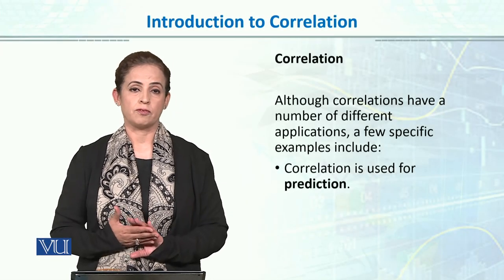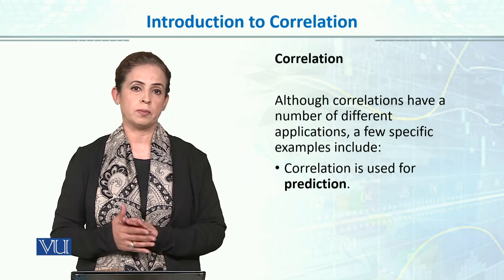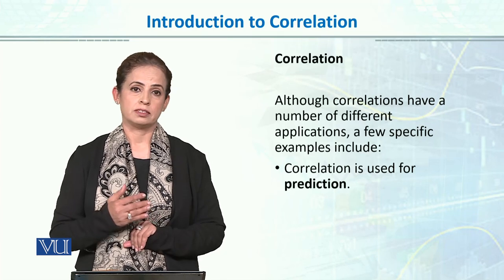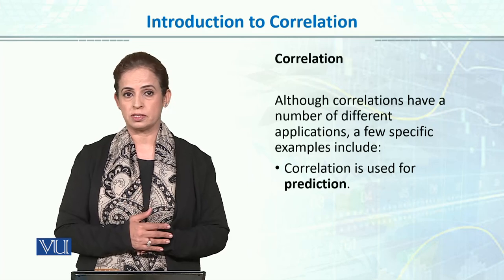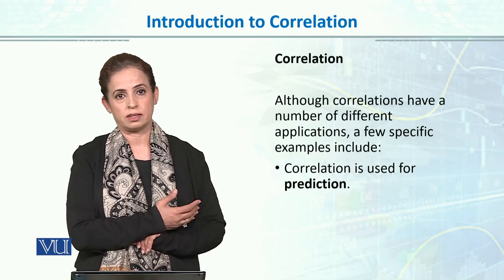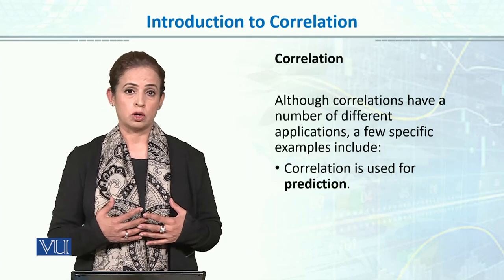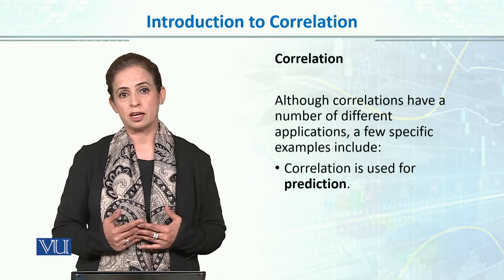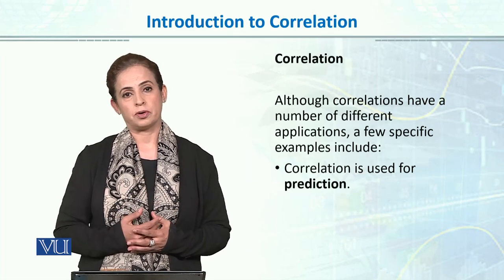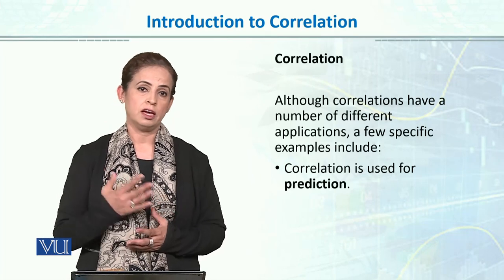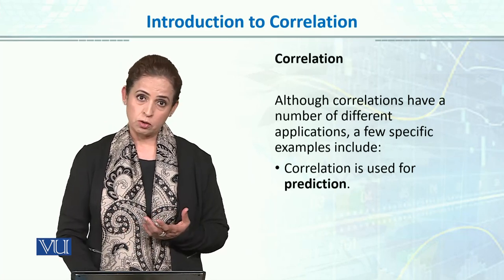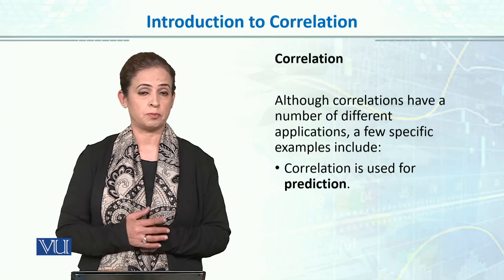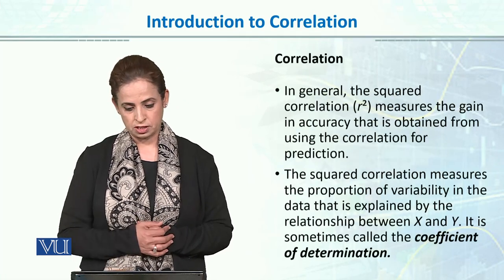Correlation has different applications. One specific example is that it is used for prediction. If there is a strong relationship between two variables, we can predict one on the basis of the other. For example, if I find a strong positive correlation between studying hours and the final grade, I can predict that if I study three or four hours every day, what my GPA could be. Prediction is one of the major goals of psychology and science, and we can achieve that with the help of correlation.